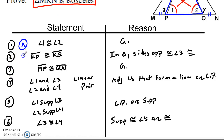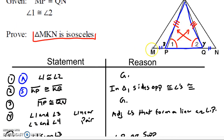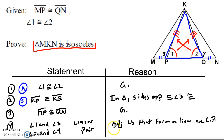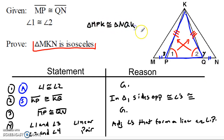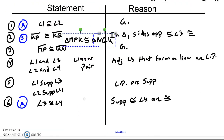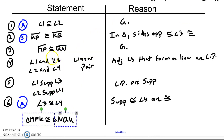So doing a little record keeping: I've got a pair of angles, a pair of sides, and another pair of angles in these two triangles — that's side-angle-side. To name them: if I call the triangle on the left triangle MPK, then the triangle on the right is going to be NQK. It's important that corresponding parts go in the same order when listing triangles.